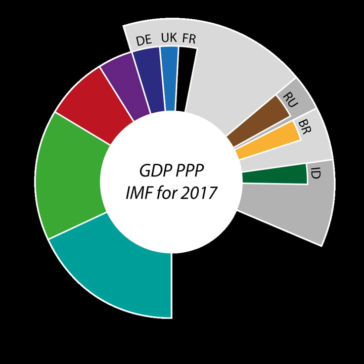This article includes a list of countries by their forecasted estimated gross domestic product based on purchasing power parity, abbreviated GDP PPP. Countries are sorted by GDP PPP forecast estimates from financial and statistical institutions in the limited period January–April 2017, which are calculated at market or government official exchange rates. The data given on this page are based on the international dollar, a standardized unit used by economists.